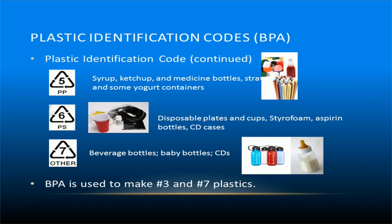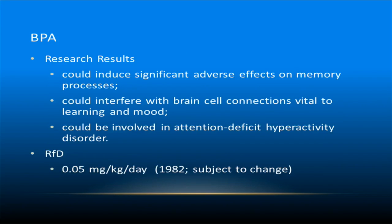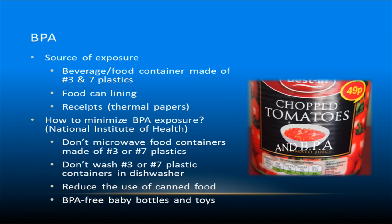Bisphenol A is a neurotoxic chemical used in the manufacture of number 3 and number 7 plastics. Studies have shown that low doses of BPA during development have persistent effects on brain structure, function, and behavior in rats and mice. BPA could induce significant adverse effects on memory processes, interfere with brain cell connections vital to learning and mood, and could be involved in the development of ADHD within humans. The reference dose for BPA is 0.05 milligrams per kilogram of body mass per day. Sources of exposure include beverage or food containers made of number 3 and number 7 plastics, food can linings, and receipts. To minimize exposure, the National Institutes of Health suggests not microwaving or machine washing food containers made of number 3 or number 7 plastic, reducing the use of canned food, and purchasing BPA-free baby bottles and toys.